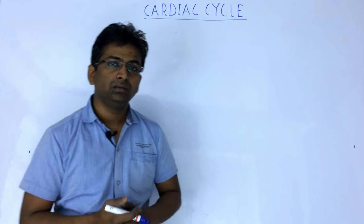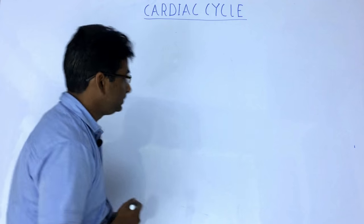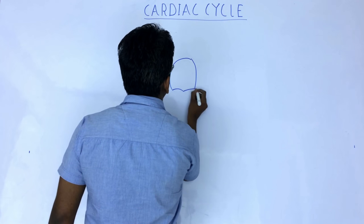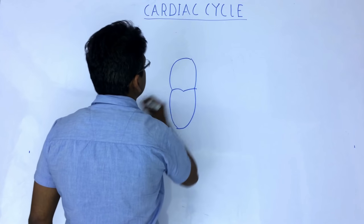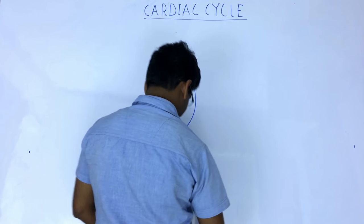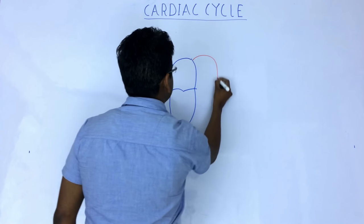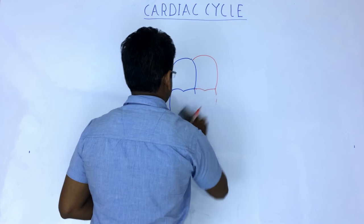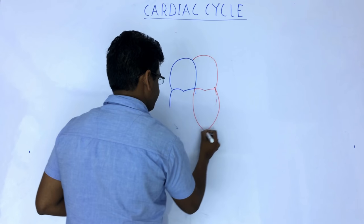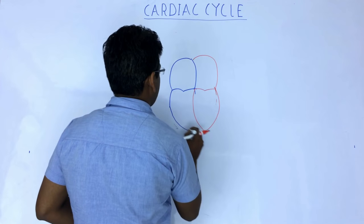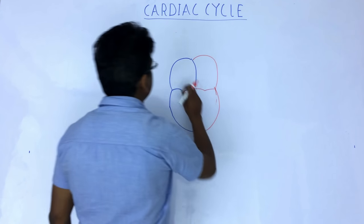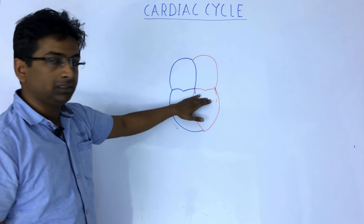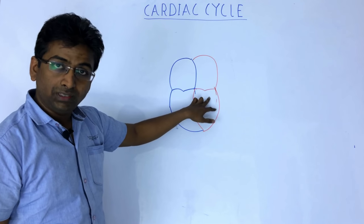Before discussing the cardiac cycle, we will revise blood circulation in the heart. The right atria and right ventricle are separated by the tricuspid valve, and the left atria and left ventricle are separated by the bicuspid valve, that is the mitral valve.